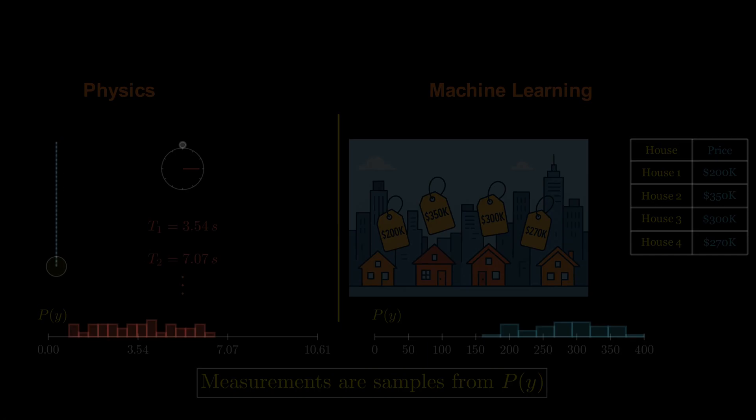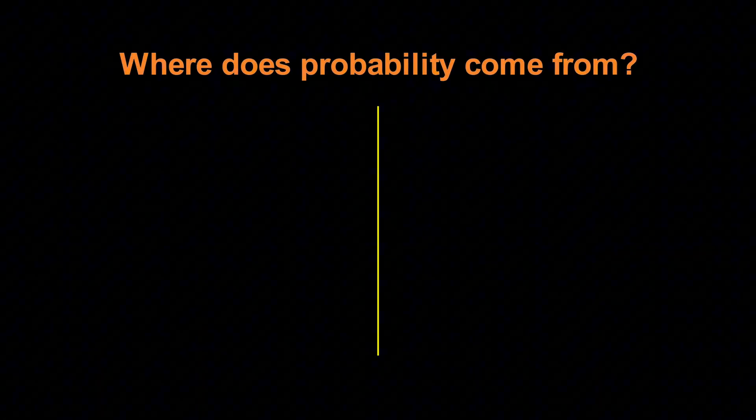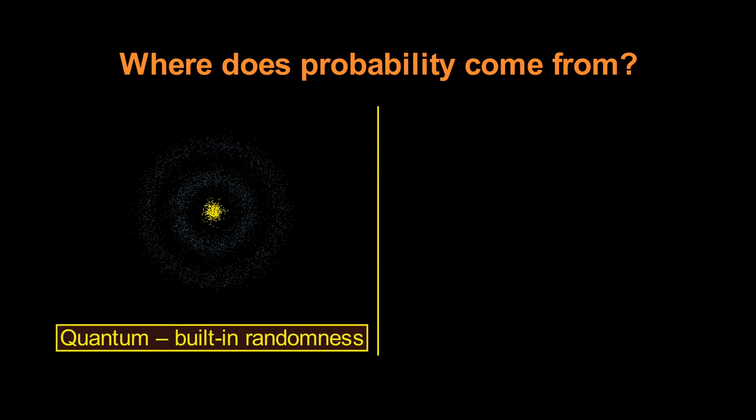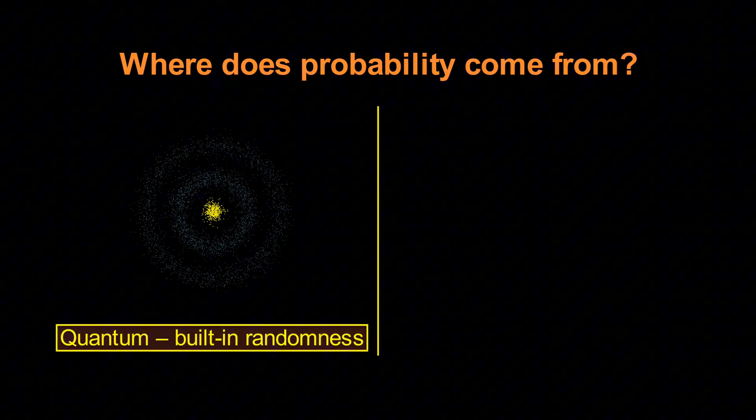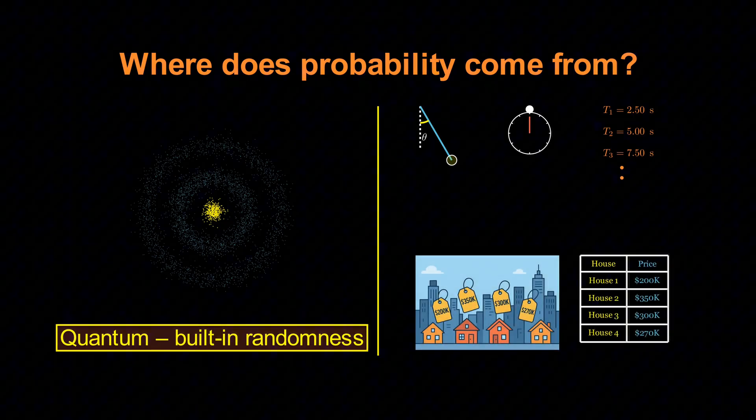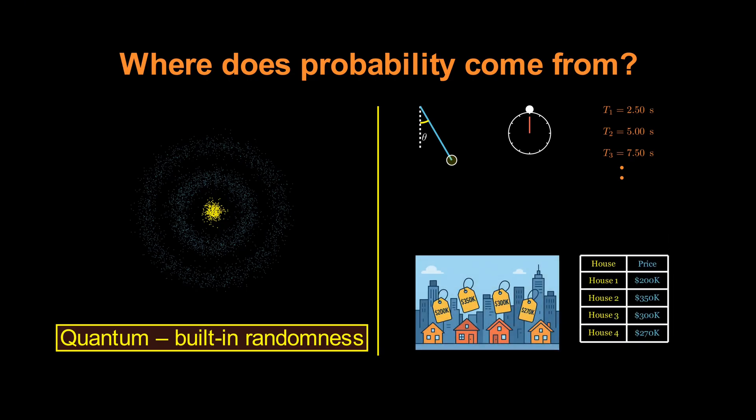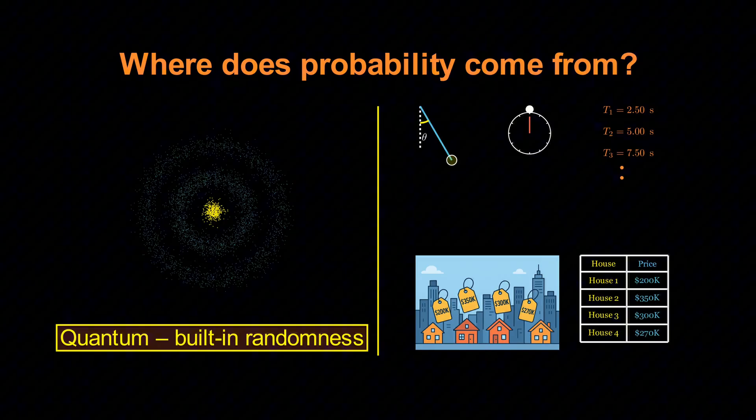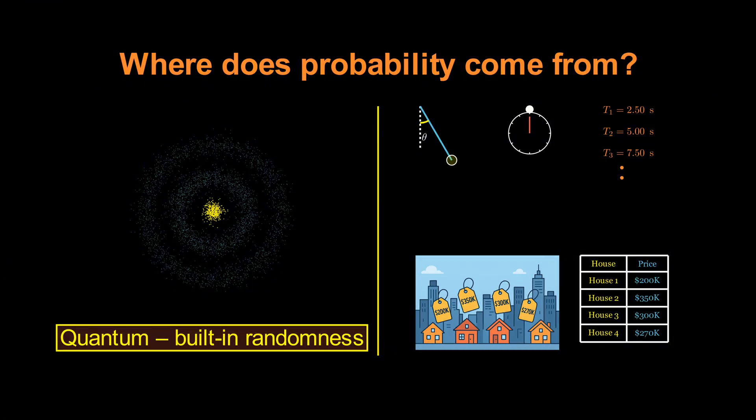Now, in quantum mechanics, probabilities come from the intrinsic randomness of nature, like the position of an electron. But here, for our pendulum or housing market, the probability isn't because nature is random at its core. It's because we are ignorant of all the tiny factors that influence the result.